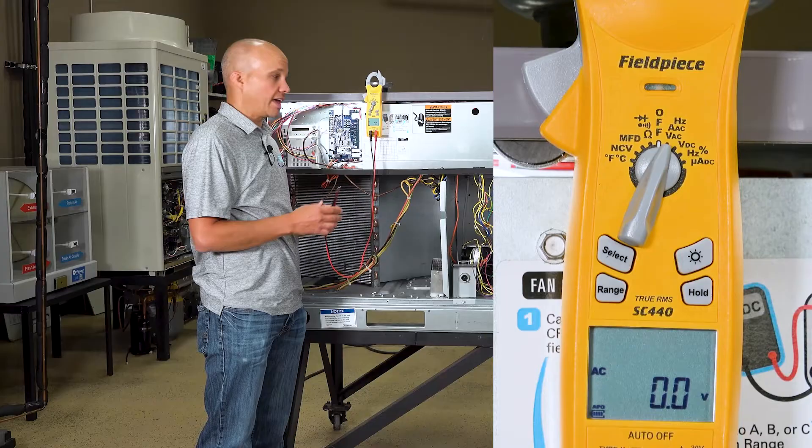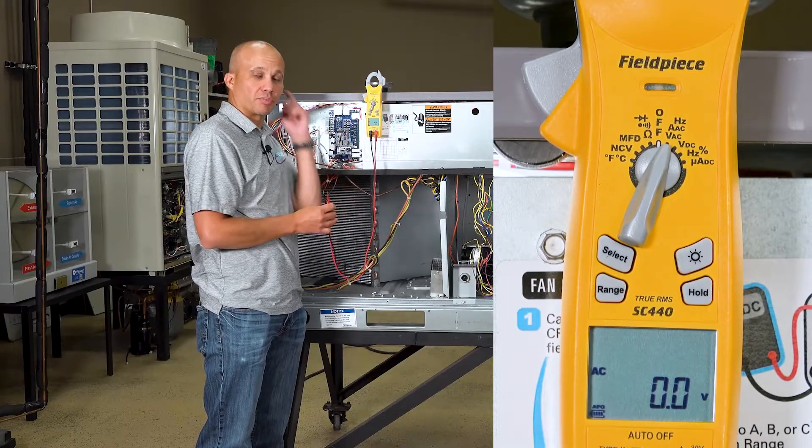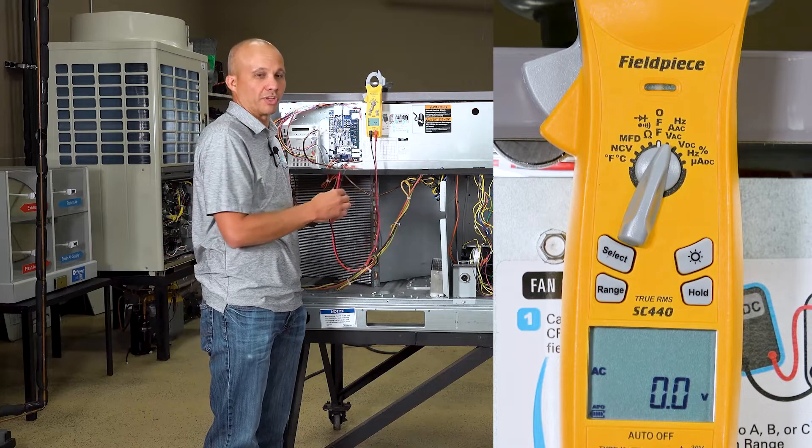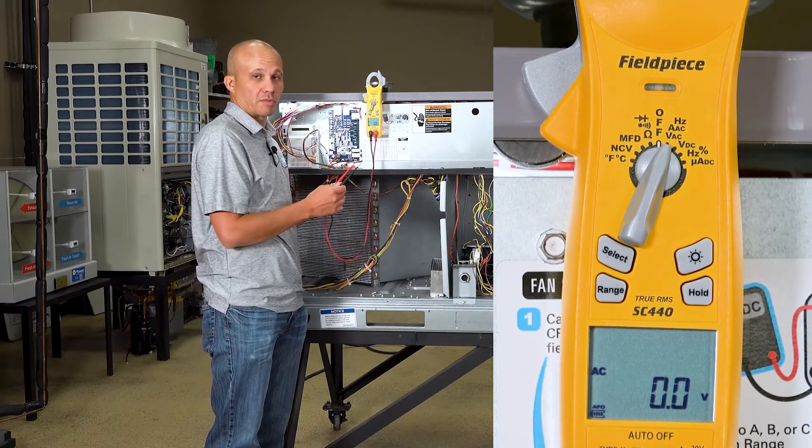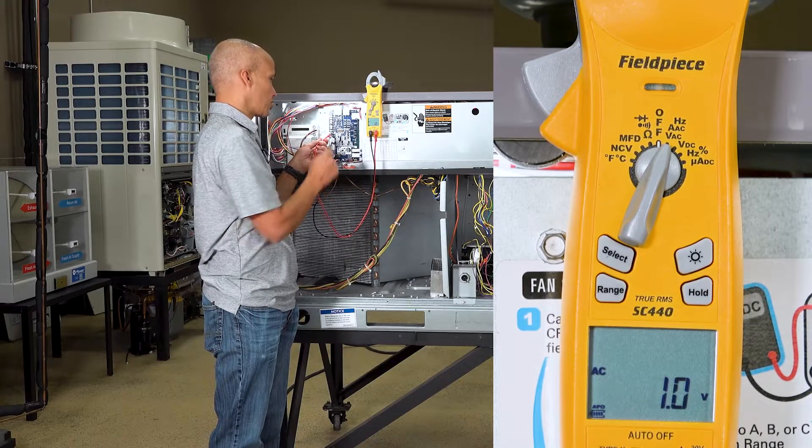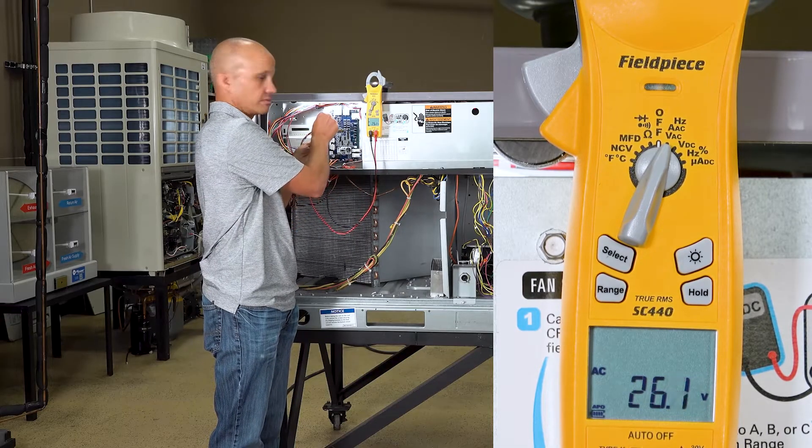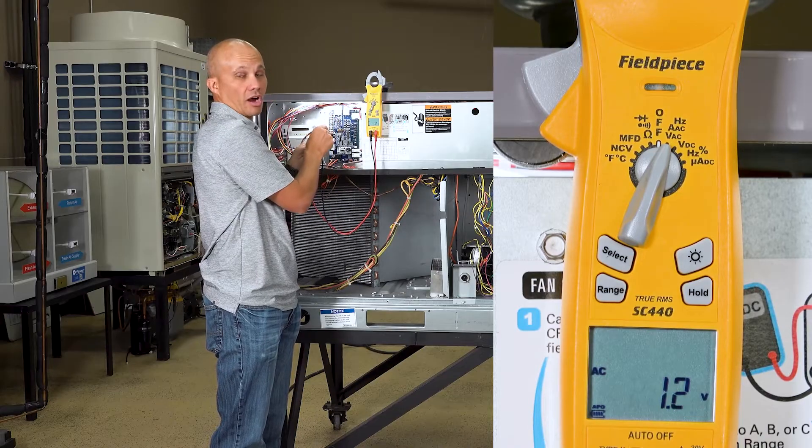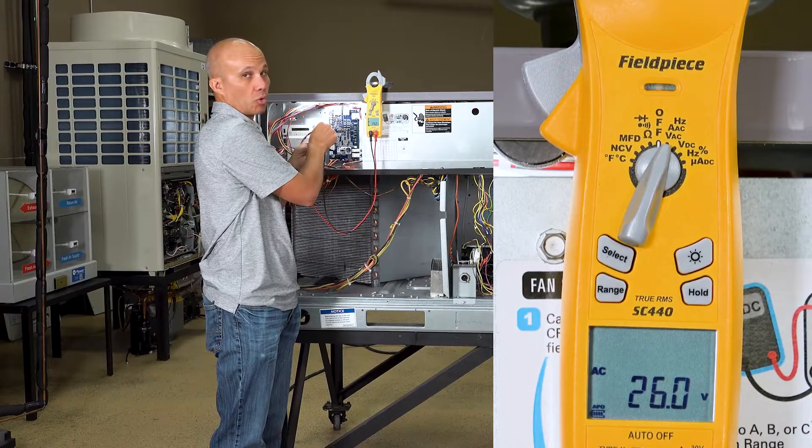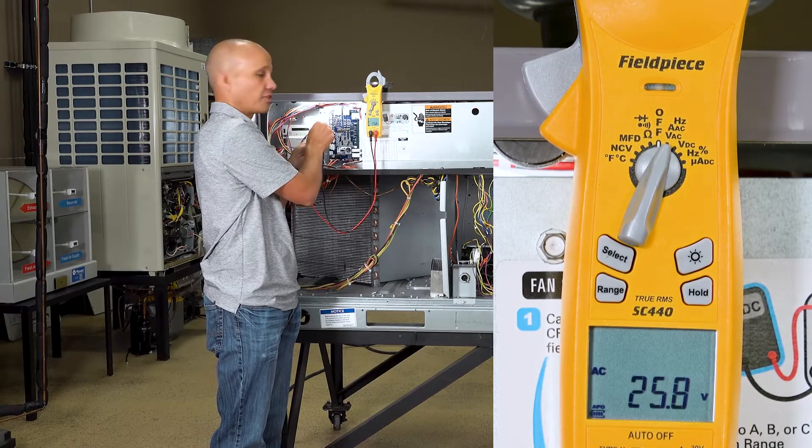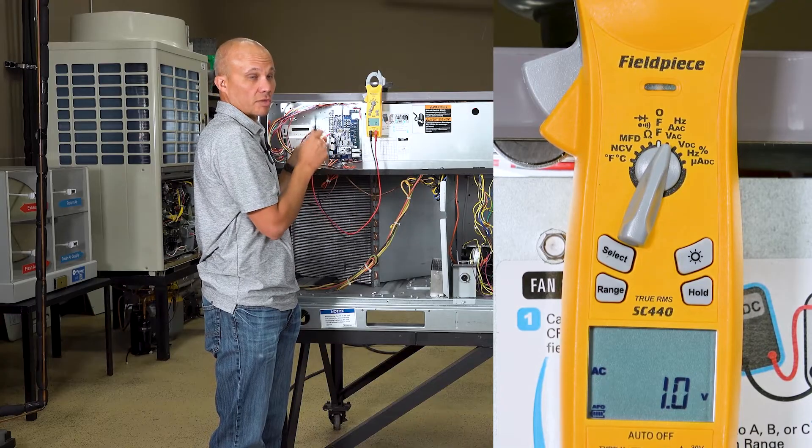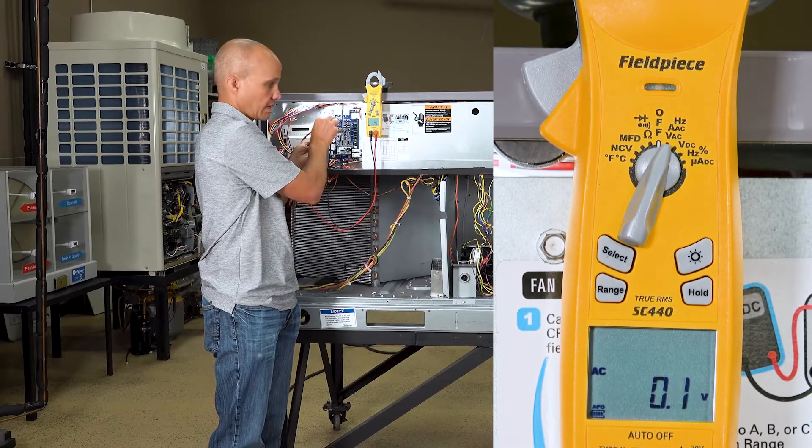Now from the thermostat we have a call for fan. You might be able to hear this fan. This is a pretty quiet unit. It's a vane axial fan instead of belt driven. So it's pretty quiet but you can hopefully hear the fan running. We'll take those same measurements we took a minute ago and see what we got. So I'm going to start with R and C just to make sure we have power which we obviously do. 24 volts, I'm good. When I go to R and Y for cooling, 24 volts because there's no cooling call. R and W for heat, 24 volts, no heating call. Now when I go to R and G there is a call so I'm expecting zero and there is.